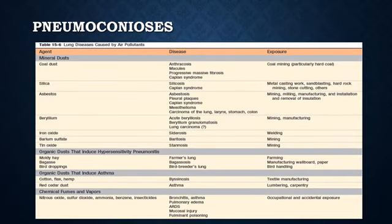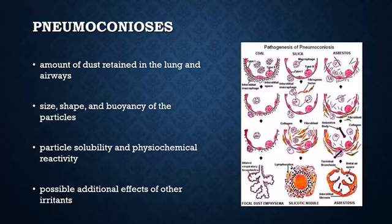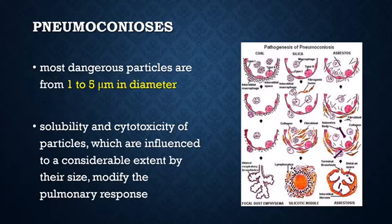The term pneumoconiosis was originally used to describe a non-neoplastic lung reaction to inhalation of mineral dust encountered in the workplace. It now includes diseases caused by organic as well as inorganic particulates and chemical fumes and vapors. The development of pneumoconiosis depends on the amount of dust retained in the lung and airways, the size, shape, and buoyancy of the particles, particle solubility and physiochemical reactivity, and the possible additional effects of other irritants. The most dangerous particles are 1 to 5 micrometers in diameter because particles of this size may reach the terminal small airways and air sacs and settle in their linings.